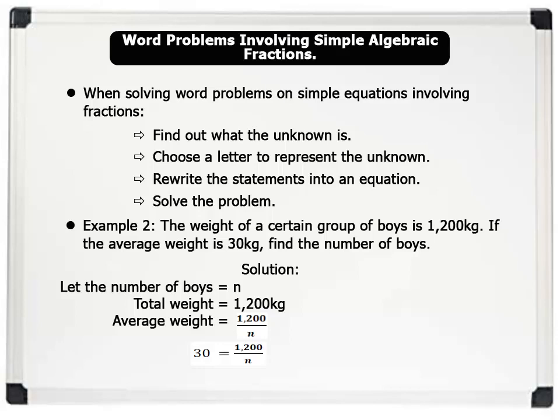Multiplying both sides by n, we have 30 times n equals 1200 times n over n. N cancels n and leaves us with 30n equals 1200. We then divide both sides by 30. Therefore, number of boys equals 40.